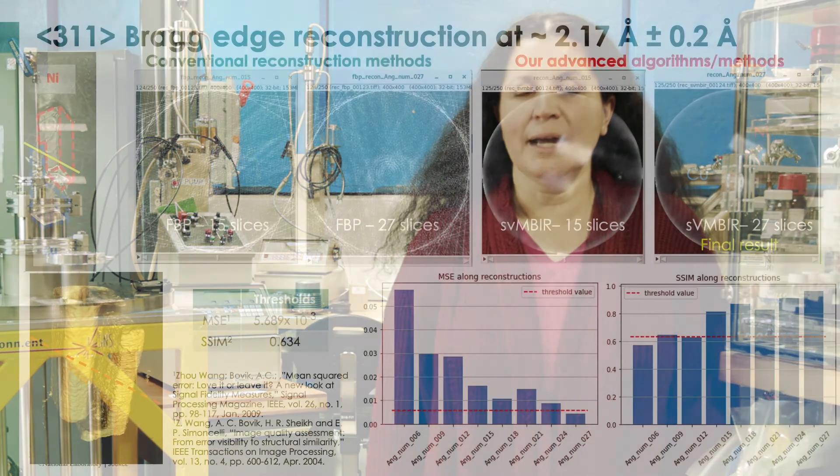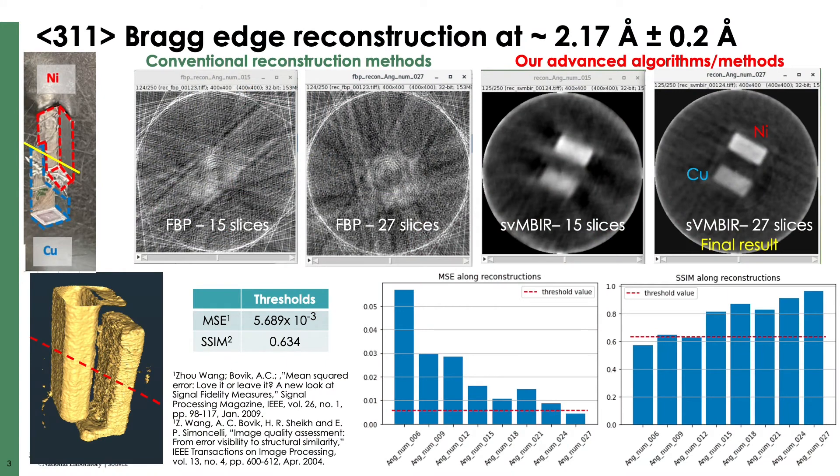We use advanced reconstruction methods because our signal-to-noise is low. And we use machine learning to decide what angles should be measured next and how the sample should be oriented. And this is done completely in an autonomous way.